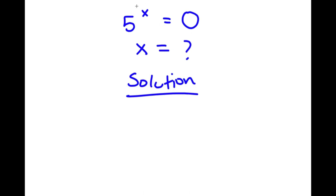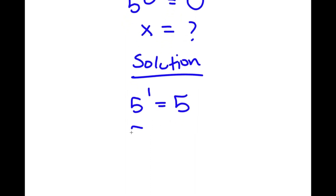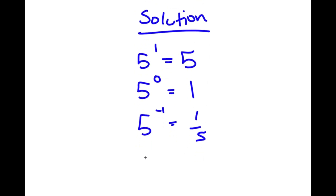I'm going to start by trying out values of x. So if I have 5 to the power of 1, this is equal to 5. If I have 5 to the power of 0, any number to the power of 0 is 1. If I have 5 to the power of negative 1, this is going to be 1 fifth. If I have 5 to the power of negative 2, this is going to be 1 over 25.